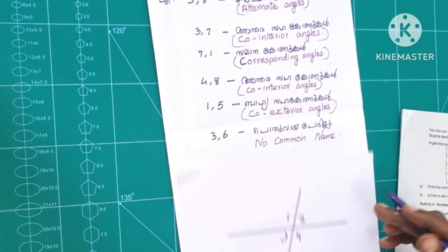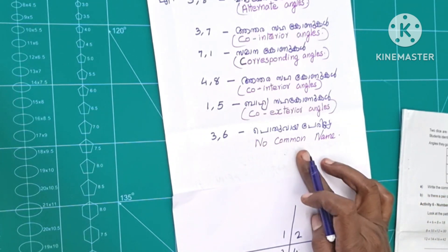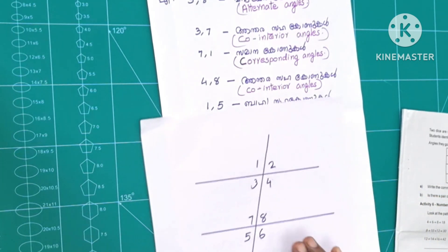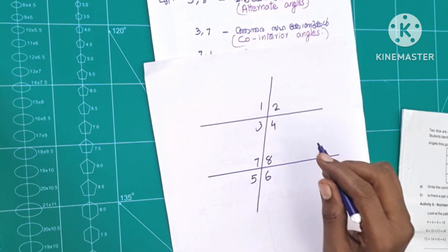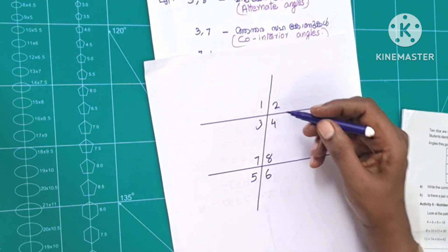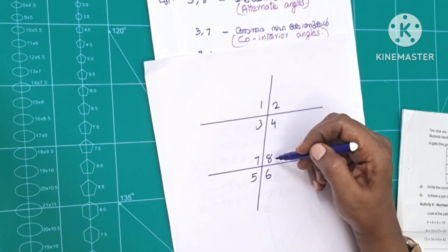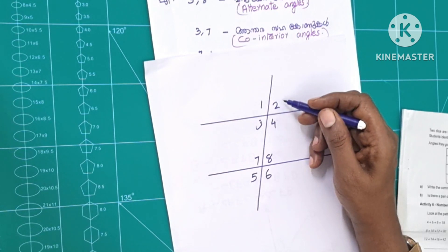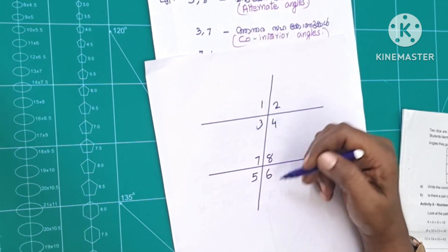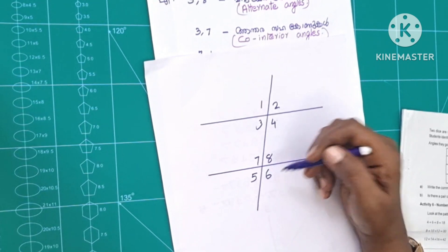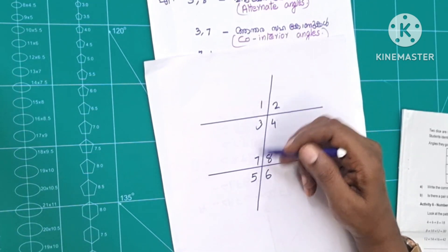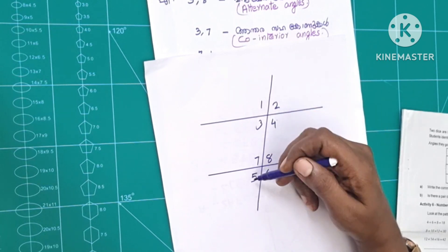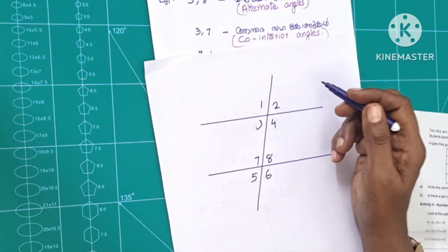Some angle pairs have no common name. Angles 1 and 2 correspond. Angles 5 and 4 and 6, and 5 — these are similar. These are alternative numbers. Angles like 5, 1, 2, 3, 4 are interior, while 5 and 6 are exterior.